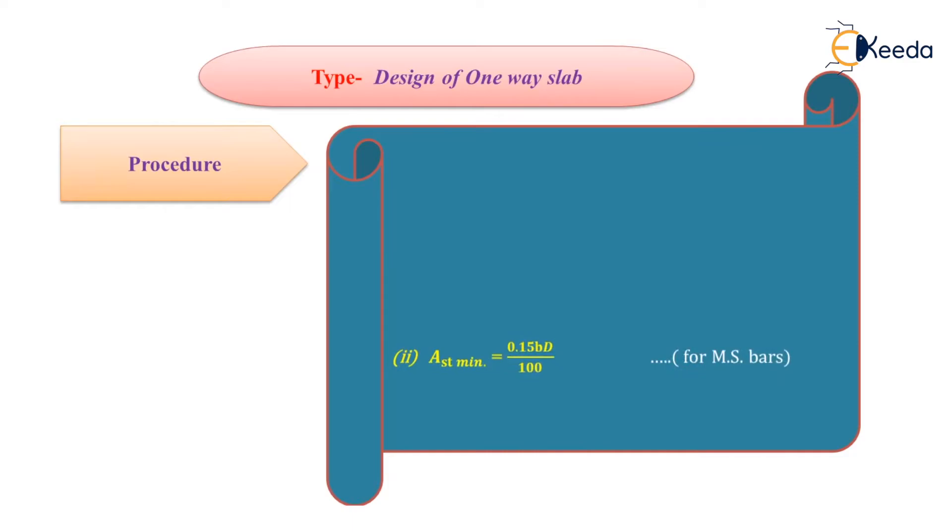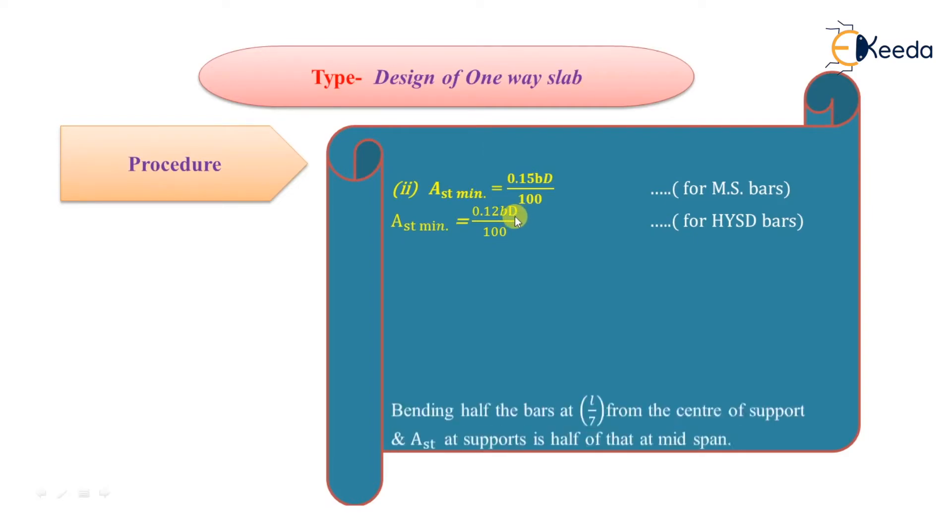Then we calculate the minimum area of steel. IS code recommends for mild steel bars, the minimum area of steel should be 0.15% of gross area. Gross area means B into capital D, the overall depth. Similarly for HYSD bars, AST minimum equals 0.12% of gross area, which is 0.12% of B into capital D where capital D is overall depth of the section.